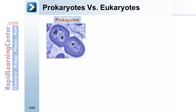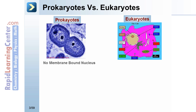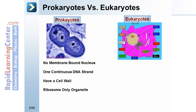Prokaryotes versus eukaryotes are compared side by side in this slide. Prokaryotes have no membrane-bound nucleus, one continuous DNA strand, a cell wall, ribosomes as the only organelle, no centrioles for mitosis, and if they have a flagella, it is a simple flagella.